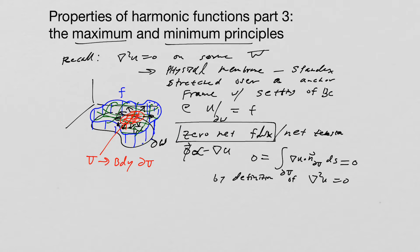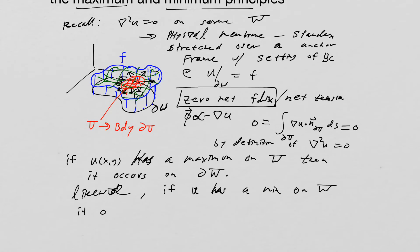So we have another property here, which is this maximum and minimum principle. And what I want to highlight is the zero net flux property. What directly results from that is this property that if u of x comma y has a maximum on W, then it occurs on partial W. Likewise, if u has a minimum on W, it occurs on the boundary.